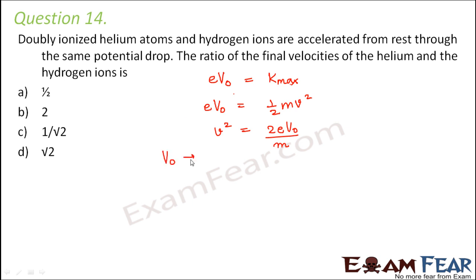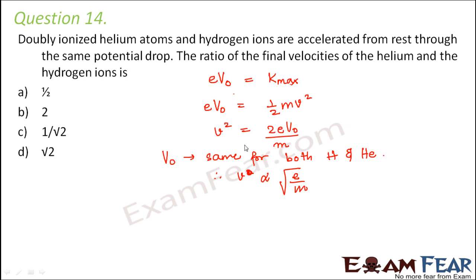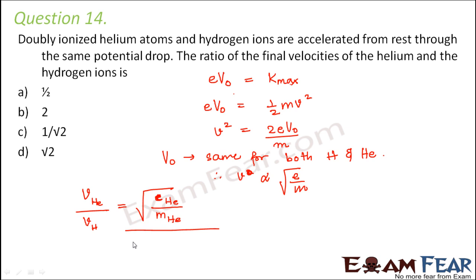In this problem, the value of V₀ is the same for both hydrogen and helium. So v squared is proportional to e by m, and therefore v is proportional to root over e by m. So v for helium divided by v for hydrogen equals root over (e for helium / m for helium) divided by (e for hydrogen / m for hydrogen).